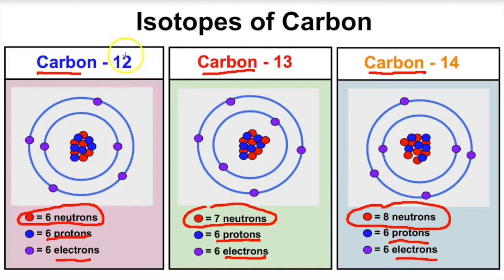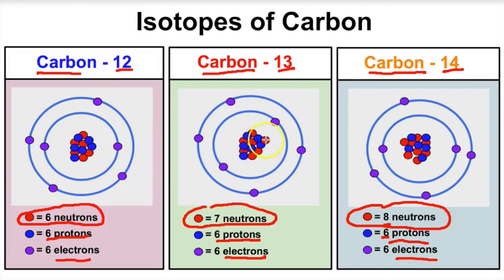So the mass of carbon-12 is going to be six plus six, which is 12. The mass of carbon-13 is going to be six plus seven, which is 13. And the mass of carbon-14 is going to be six plus eight, which is 14. So isotopes are atoms of the same element that have different numbers of neutrons in their nucleus and therefore have different mass numbers or atomic masses.